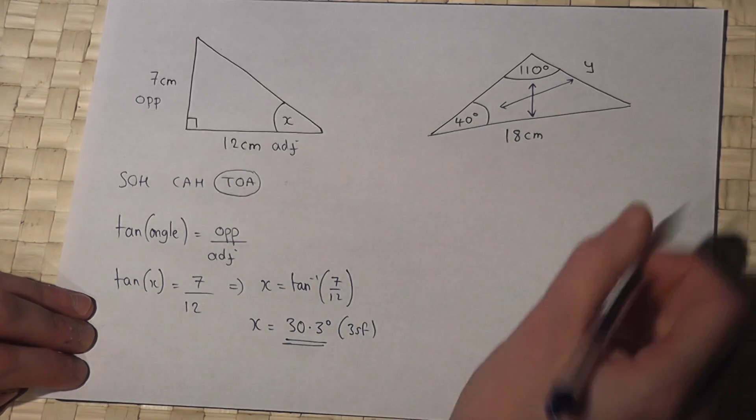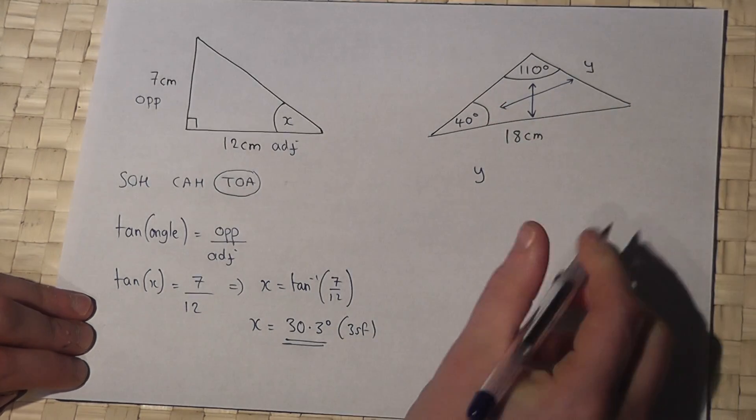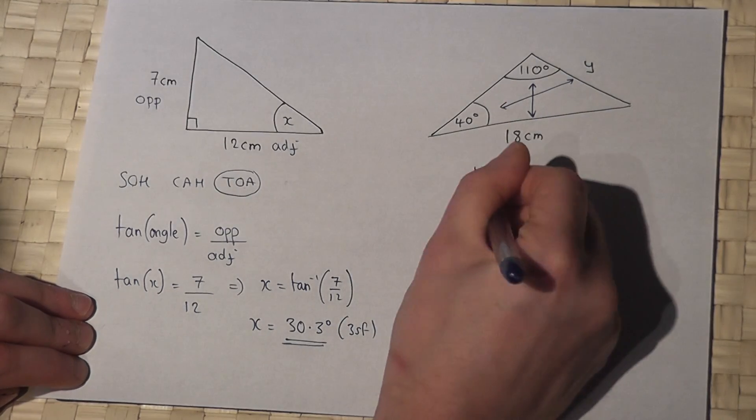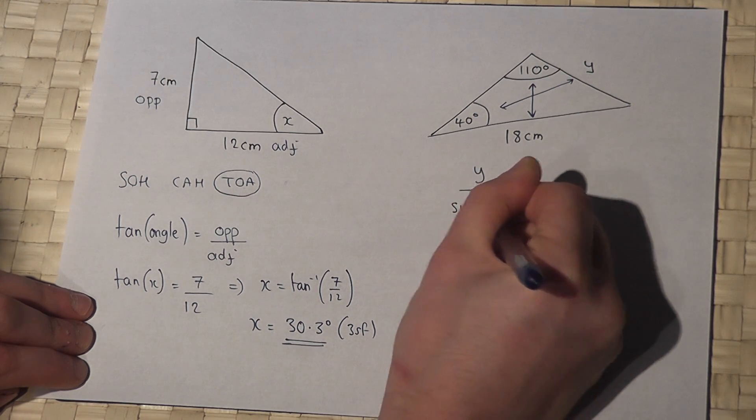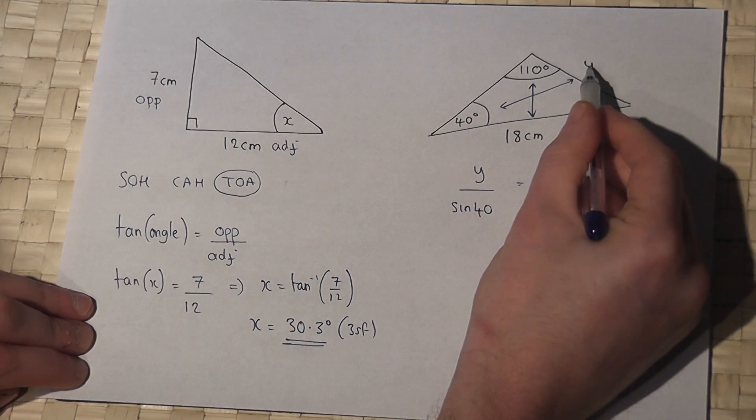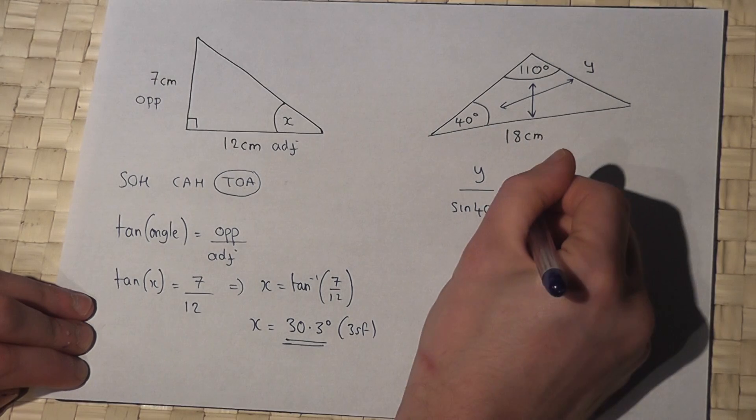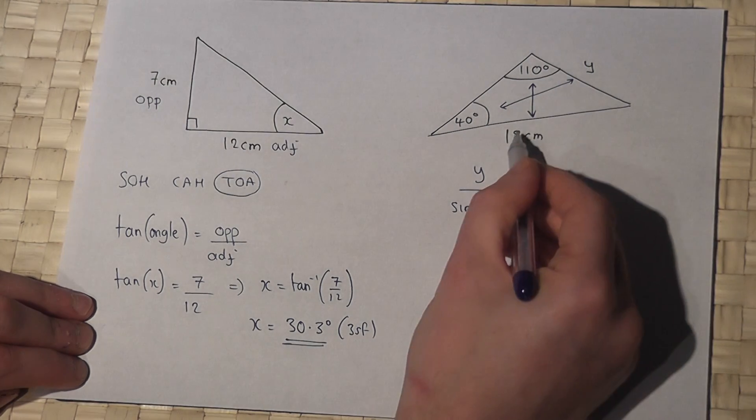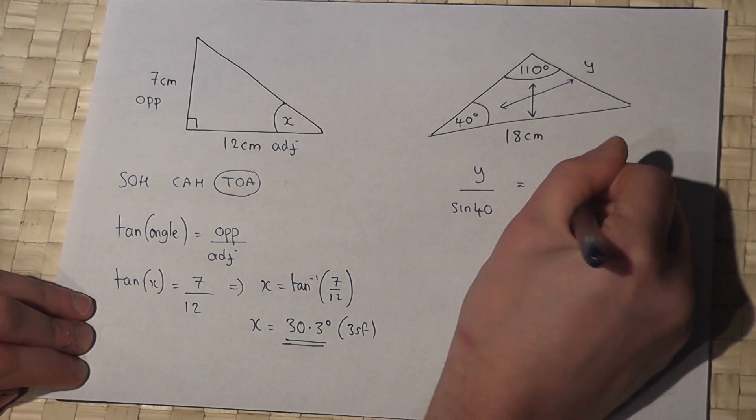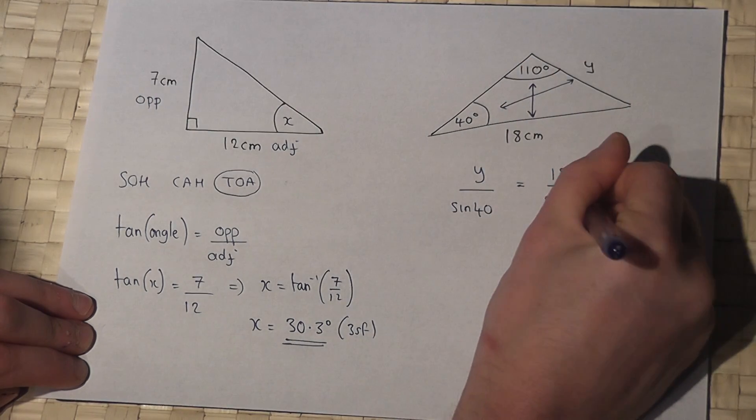If I get my unknown side, so y, then y over sine of 40, the ratio of side over sine angle, is the same as the ratio of that side, 18, over sine of this angle, 110.